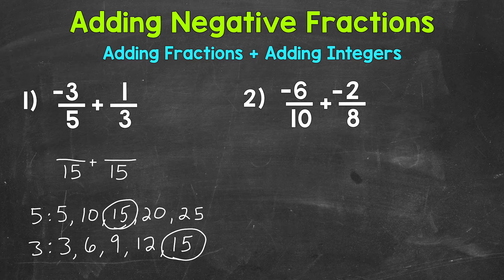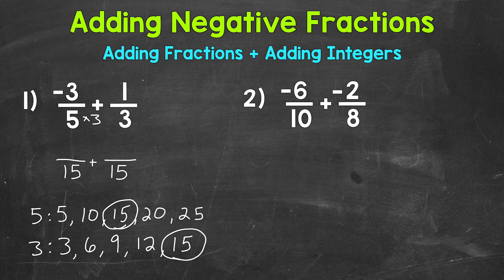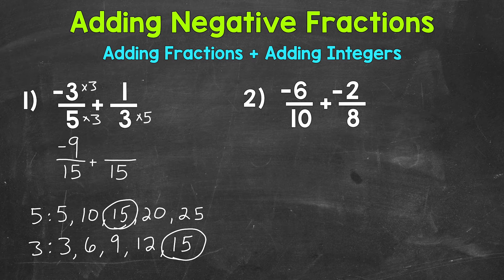Now we need to rename our fractions with that denominator of 15 — equivalent fractions with a denominator of 15. For negative three fifths: five times three is 15, so we multiply the numerator by three as well. Negative three times three is negative nine, giving us negative nine fifteenths. For one third: three times five is 15, so one times five is five, giving us five fifteenths.